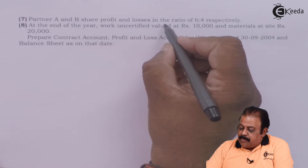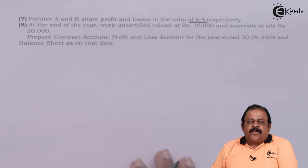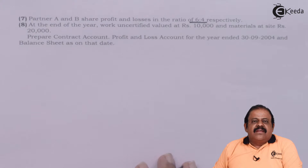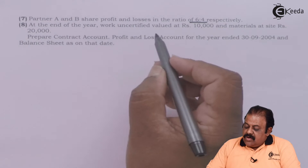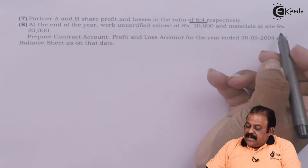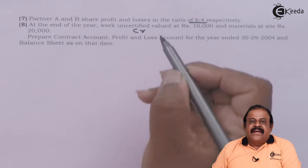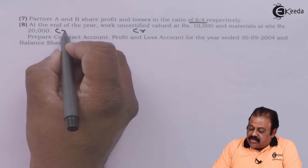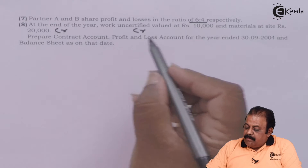Partners A and B share profits and losses in the ratio of 6:4 — the profit sharing ratio is given. If the ratio is not given, we take equal ratio. At the end of the year, work uncertified value is 10,000 and material at site is 20,000. Work uncertified will be credited to the contract account; material at site of 20,000 will also be credited to the contract account.